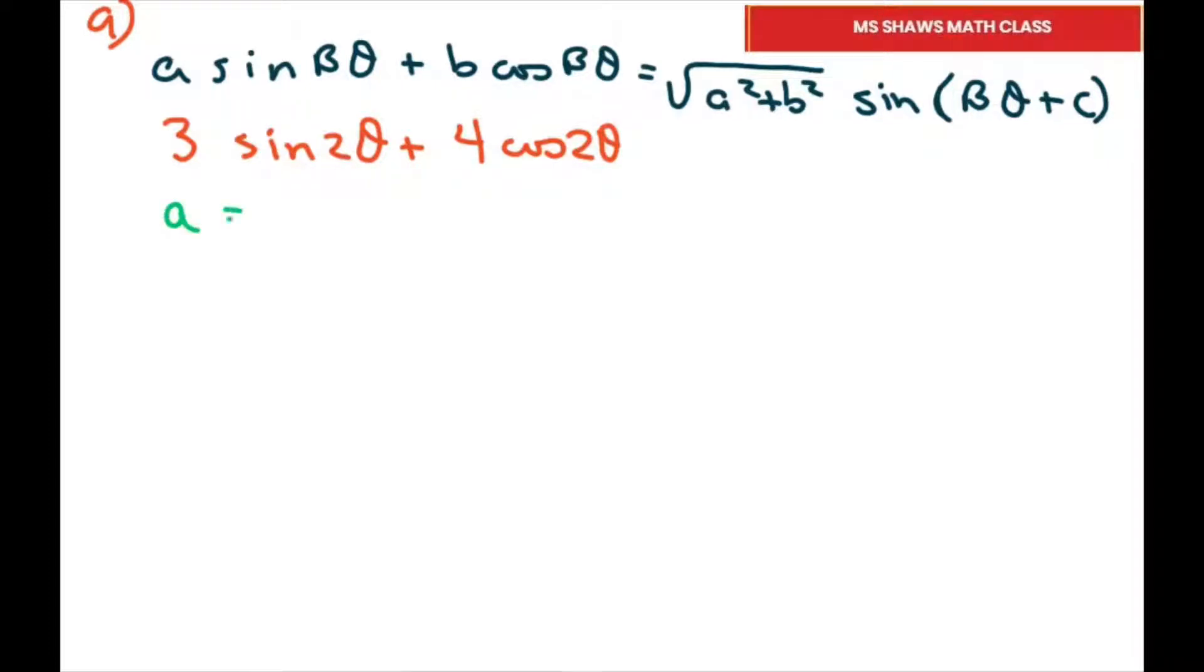We have our little a equals 3, our little b equals 4, and our big B, it looks like theta, big B equals 2 right there.